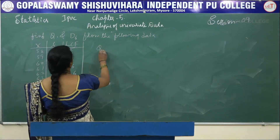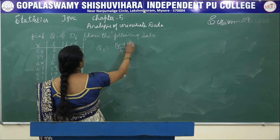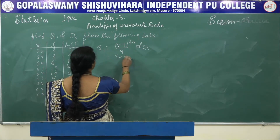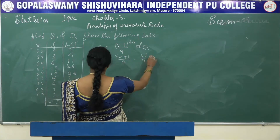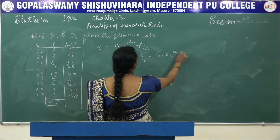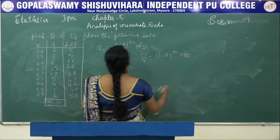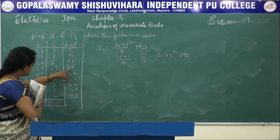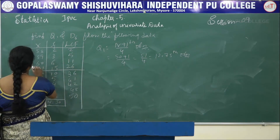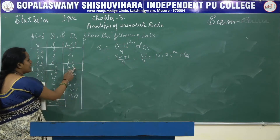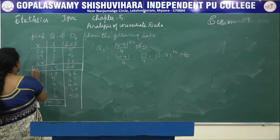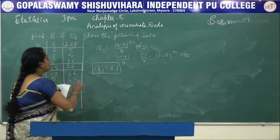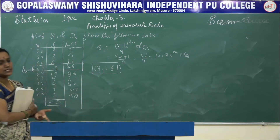To find Q1, it is the (n+1)/4 th observation = (50+1)/4 = 12.75th observation. The 12.75th observation corresponds to LCF value 26, and the corresponding X value is 61. So Q1 = 61.